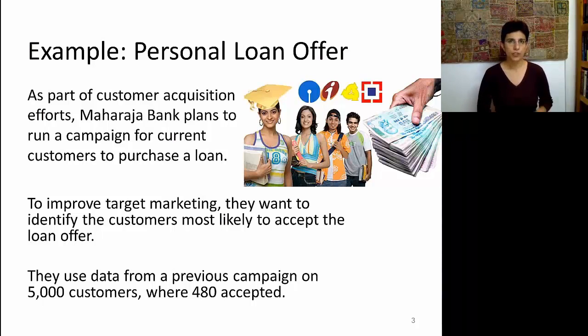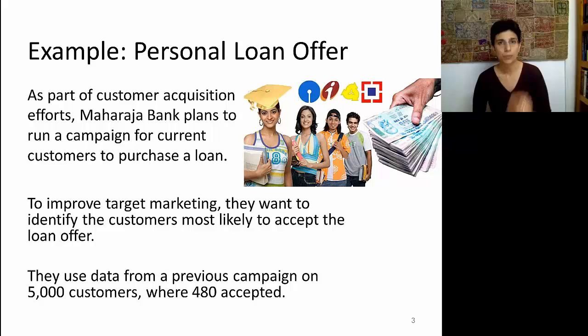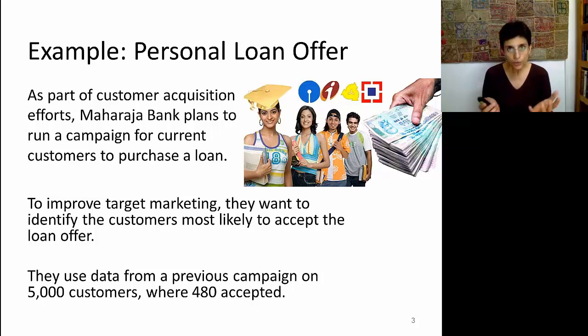So let's look at a small example, just to make sure that you understand how to apply this rule and also to consider a few of its issues. Suppose we have a bank, Maharaja Bank, that plans to run a campaign for current customers to purchase a loan. To improve target marketing, the bank wants to identify the customers who are most likely to accept the offer. In order to build this algorithm, they're going to use data from a previous campaign. You always have to learn from some data, and that previous campaign is probably similar in sufficient ways so that we can use it to infer about future campaigns.